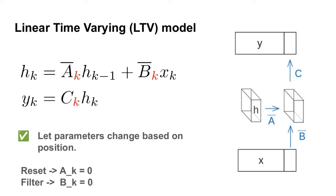This small change fixes all of our problems. If we want to reset our hidden state, we simply set A-bar sub-K to 0. That matrix multiplies by our previous hidden state, removing it entirely. If we want to ignore an input word, we simply set B-bar sub-K to 0, and it just ignores that word. LTV models allow us to have selectivity over our input.